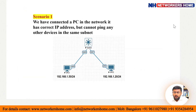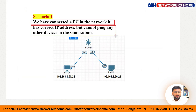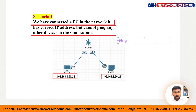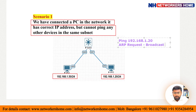Scenario 1: we have connected a PC in the network, it has a correct IP address but cannot ping any other device in the same zone. For example, we have a switch connected to PC1 with IP 192.168.1.50/24 and PC2 with IP 192.168.1.20/24. When we try to ping from PC1 to 192.168.1.20, first our request will be sent in broadcast form, because we need to resolve the MAC address.